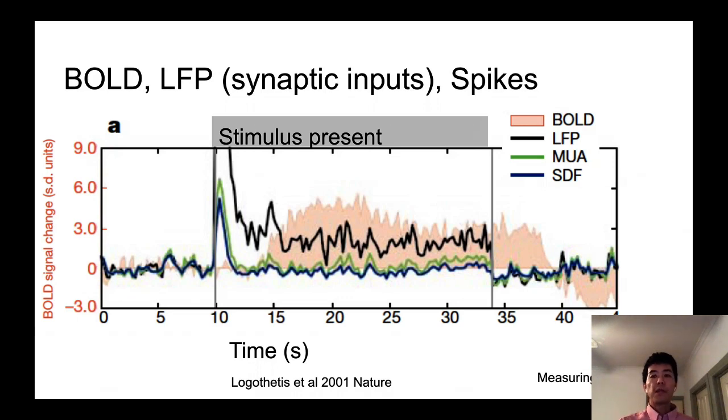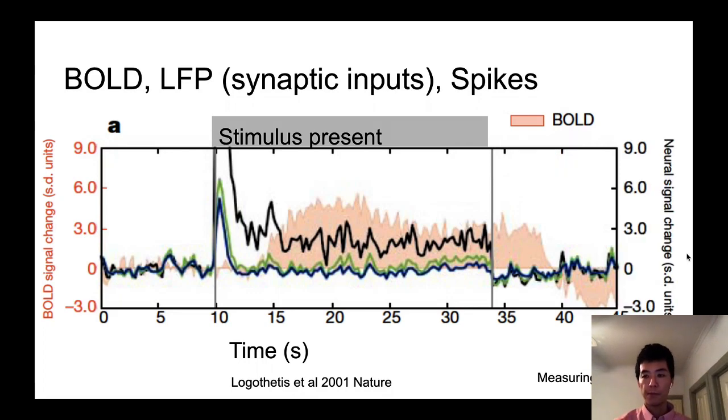The other measure, local field potential, shoots up after the stimulus onset. It goes like crazy and then comes back. But it keeps on living above the baseline until the stimulus is turned off. And then after the stimulus turning off, it goes slightly below the baseline and then comes back.